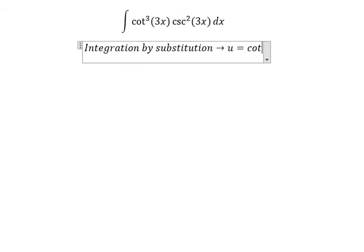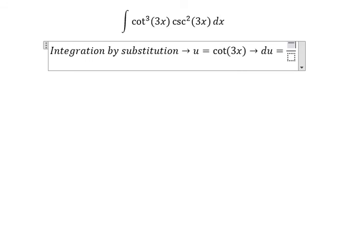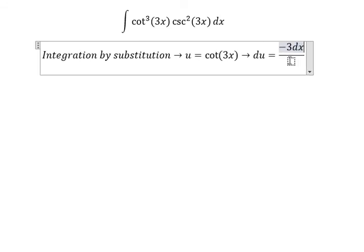So we will have u equal to cot(3x). Later, we do du, that's the first derivative, so you get negative 3dx over sine squared of 3x.